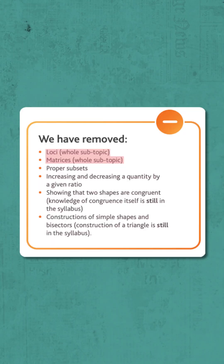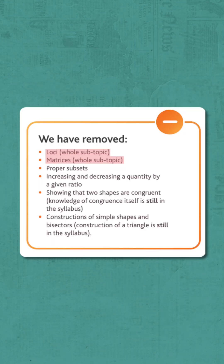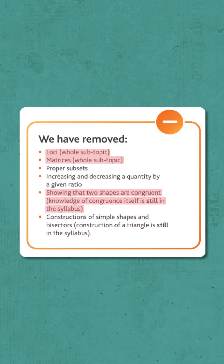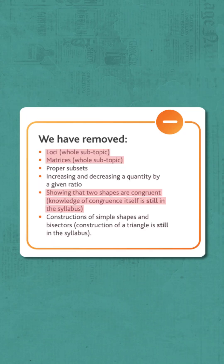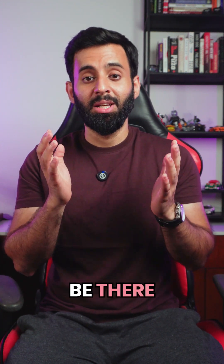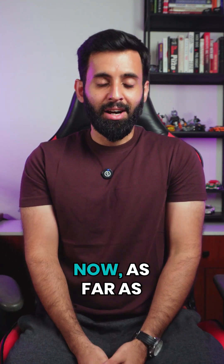And at number three, thankfully, we have congruent triangles. Do keep in mind that you don't have to prove that two triangles are congruent, but your understanding should still be there.